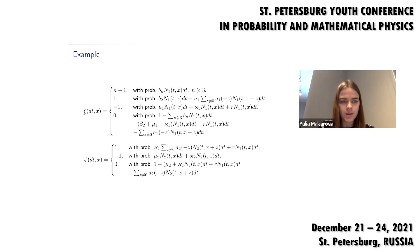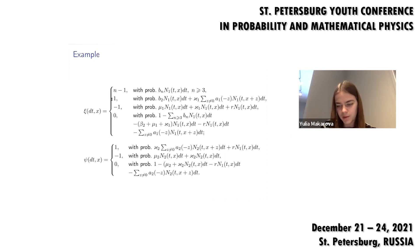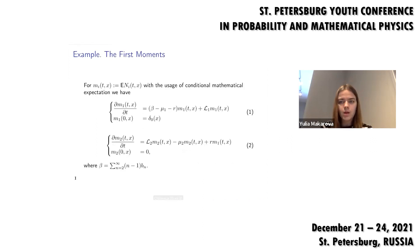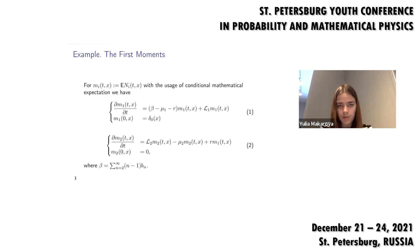Particles of the first type can produce offspring, or nothing can happen to them, or they can die, jump, or produce two particles. Particles of the second type can either die or jump between lattice points. We study the first moments, and using conditional mathematical expectation we obtain the equations for the moments.